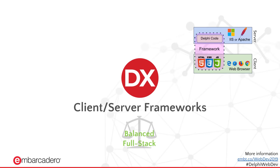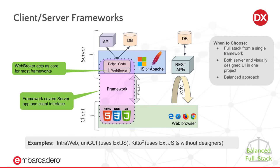Client-server frameworks are the balanced or full-stack approach to building web applications. The framework runs with Web Broker as the core on the server, and the server produces HTML, CSS, and JavaScript that is sent to the client. With transpilers you're frequently just producing HTML and JavaScript files put on the web server — they are pure client solutions — whereas client-server frameworks are server solutions that produce a client. The client application can call back to your server for data or interactivity, and can also call external REST APIs on different servers.